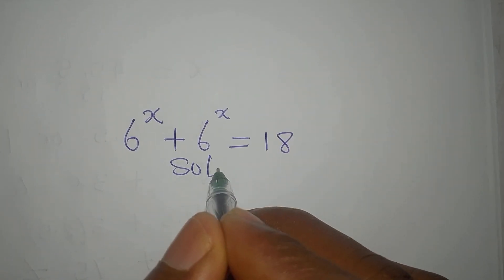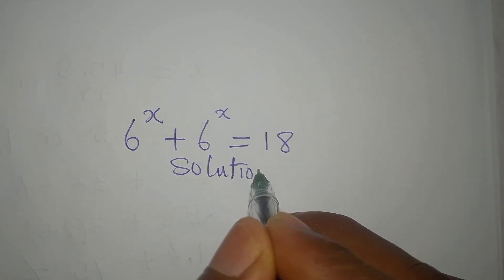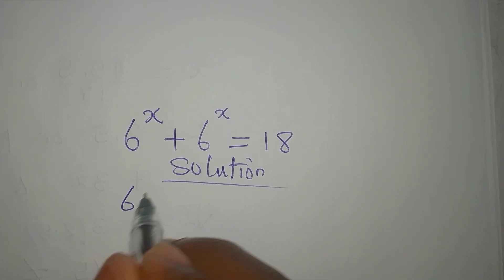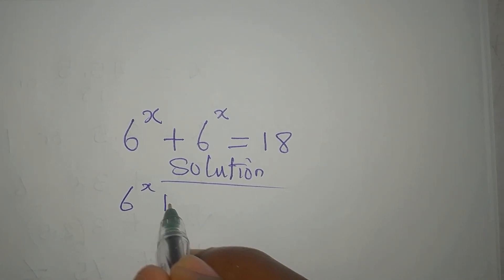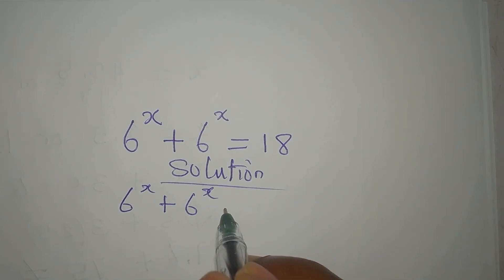Hello everyone, let's provide the solution to this problem: 6 to the power of x plus 6 to the power of x equals 18.